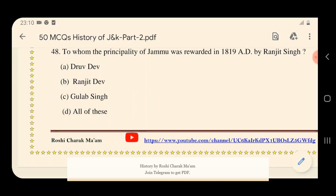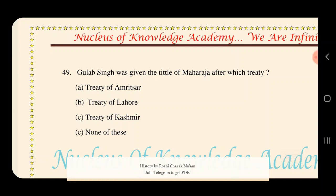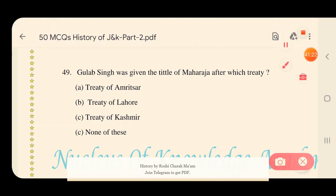Question 50: Gulab Singh was given the title of Maharaja after which treaty? Options: A) Treaty of Amritsar, B) Treaty of Lahore, C) Treaty of Kashmir, D) None of these. The right answer is the Treaty of Amritsar — Gulab Singh received the title of Maharaja after the Treaty of Amritsar.